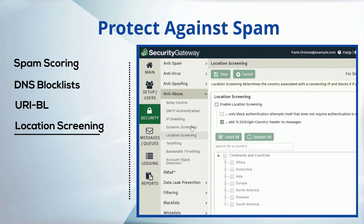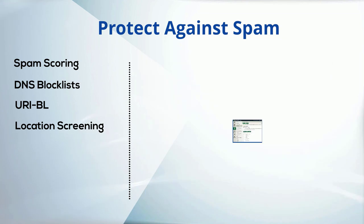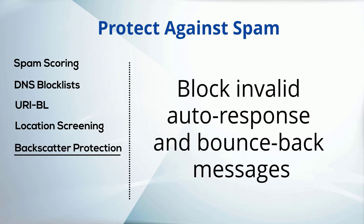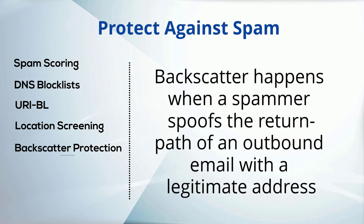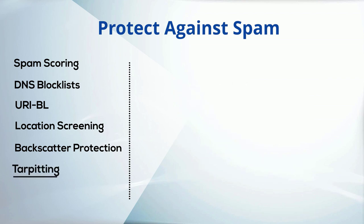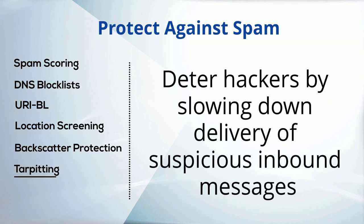Blocking email from specific regions can reduce a surprising amount of spam. Enable Backscatter Protection to protect users from receiving bounce-back or auto-response emails in response to messages that they never sent. Backscatter happens when a spammer spoofs the return path of an outbound email with a legitimate address. Backscatter protection can prevent this. Use tar-pitting to deter hackers by slowing down delivery of suspicious inbound messages.